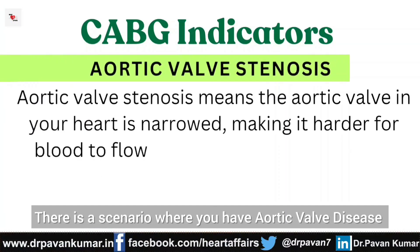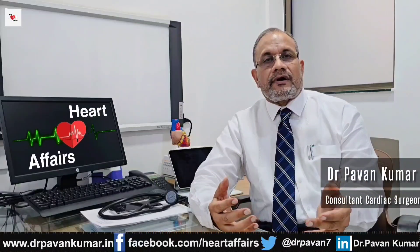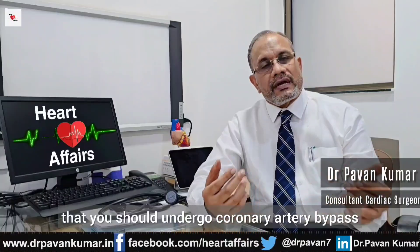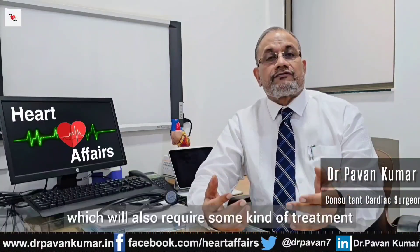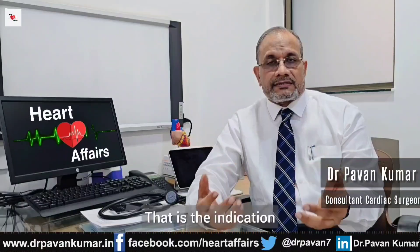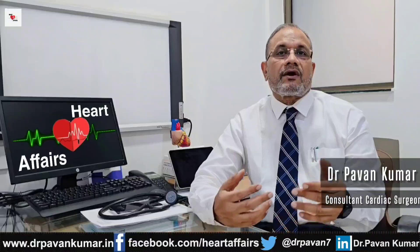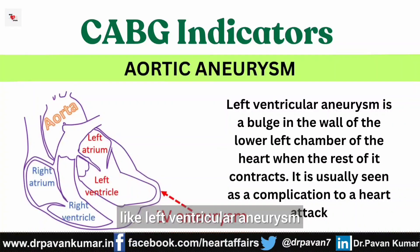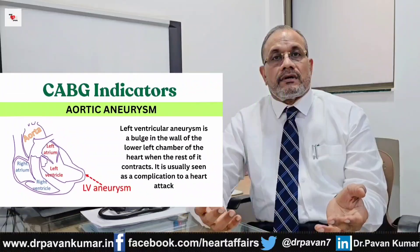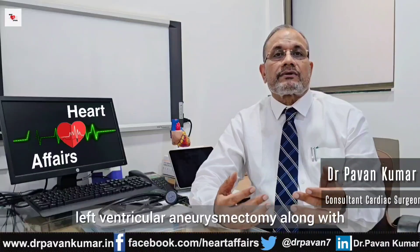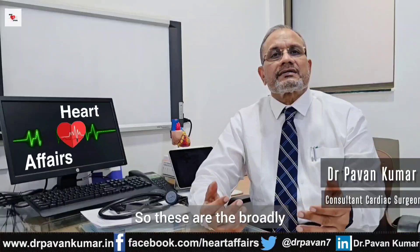Another scenario is when you have aortic valve disease — such as aortic valve stenosis or aortic regurgitation — or any other concomitant heart condition requiring a second procedure alongside coronary artery bypass surgery. For example, an ascending aortic aneurysm with coronary artery blocks requires bypass surgery combined with aneurysm treatment. Similarly, a post-heart-attack complication like left ventricular aneurysm — where the left ventricle balloons out — requires left ventricular aneurysmectomy along with coronary artery bypass surgery.